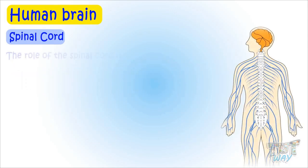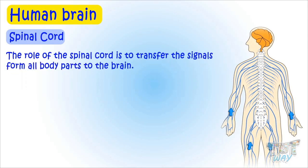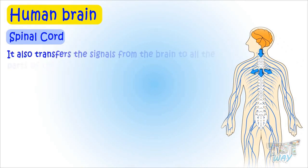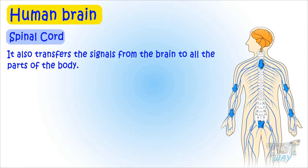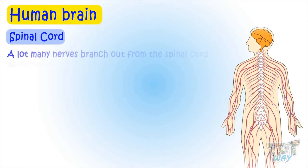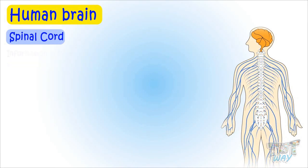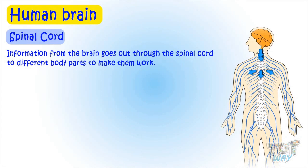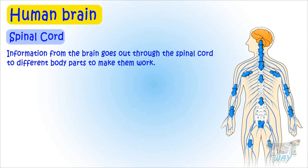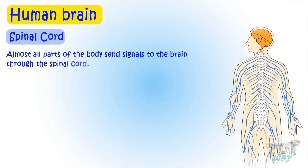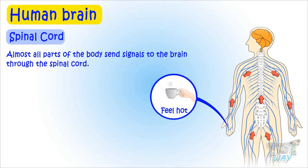The role of the spinal cord is to transfer signals from all body parts to the brain, and also to transfer signals from the brain to all parts of the body. Many nerves branch out from the spinal cord to different parts of the body. Information from the brain goes out through the spinal cord to make body parts work.